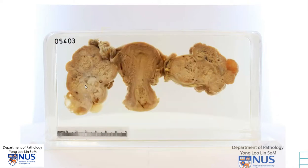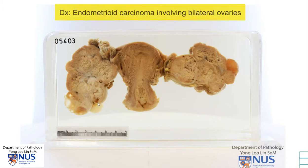So what we see here are bilateral tumors involving the ovary, which have a rather solid nodular appearance with focal cystic areas. After microscopic examination, the diagnosis here is endometrioid carcinoma involving bilateral ovaries.